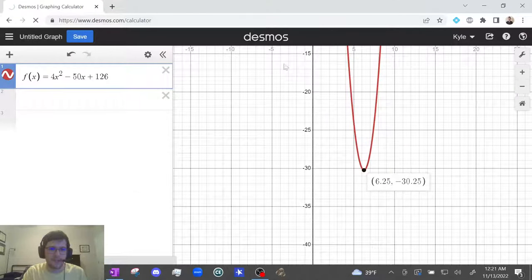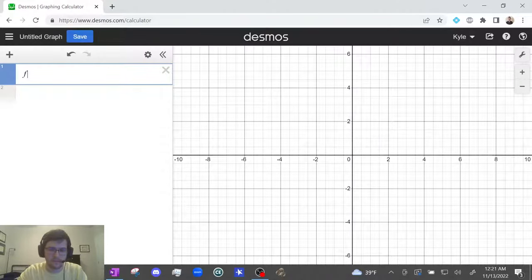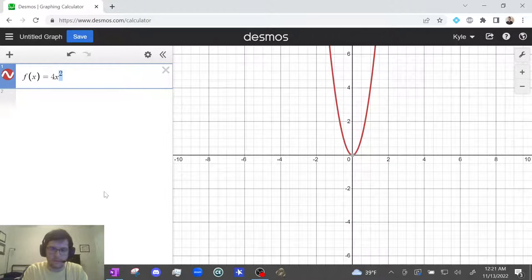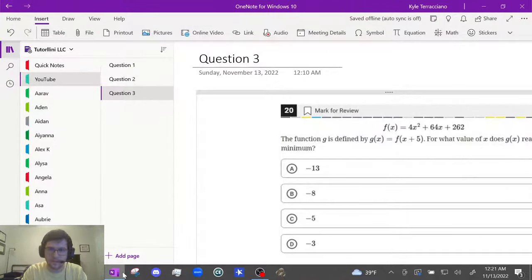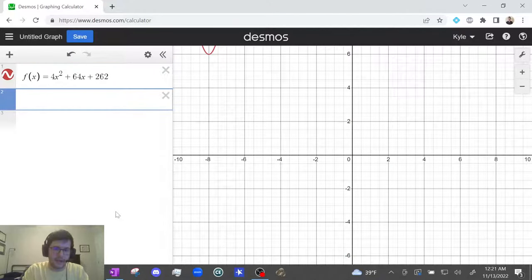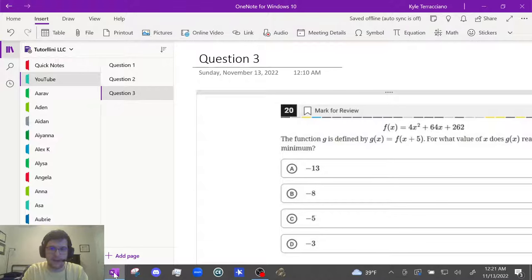And we're gonna do f of x equals 4x squared plus 64x plus 262. But the question doesn't ask us about f of x. It asks us about g of x equals f of x plus 5.